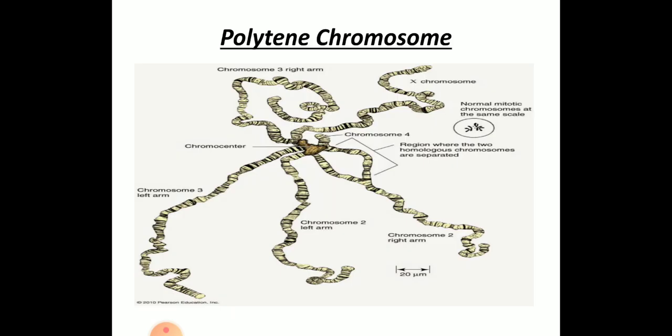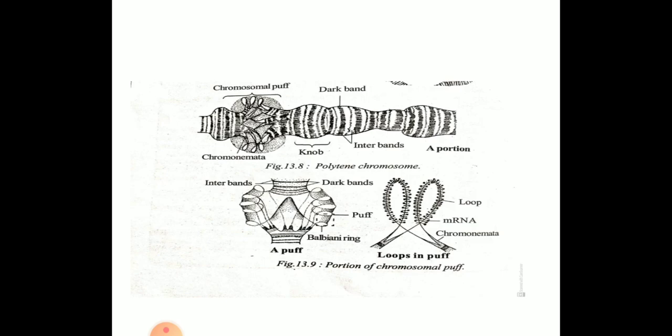Looking at the structure of the polytene chromosome, you can see many different strands — around five chromosomal strands plus one X chromosome. The chromocenter is at the center where all the strands are held together. The dark and light interband regions are visible, along with the puffing regions and loop formation, due to the presence of DNA and RNA.